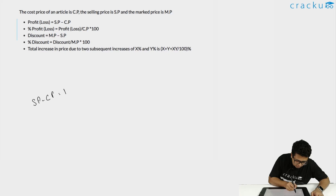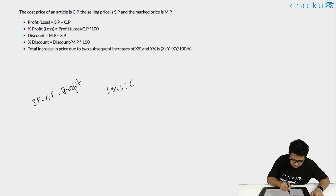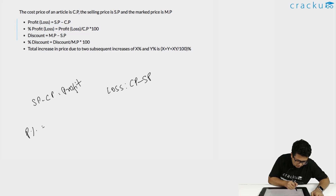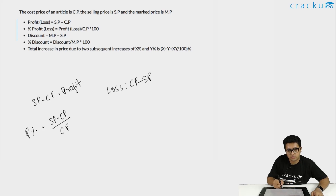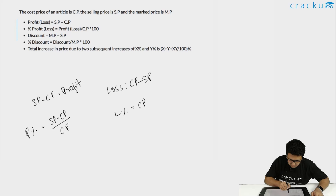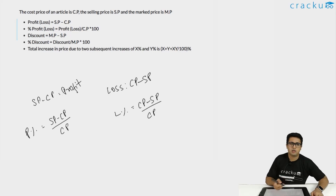For profit, the profit percentage equals selling price minus cost price divided by cost price. If it is a loss, since the cost price will be higher than the selling price, the loss percentage will be cost price minus selling price divided by the cost price. So it's loss on the cost price — whatever it cost the vendor.